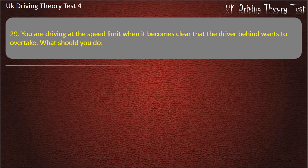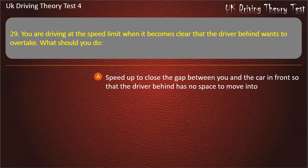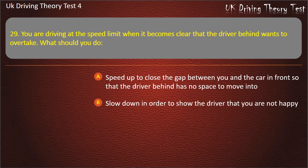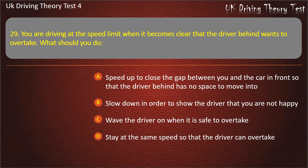Question 29. You are driving at the speed limit when it becomes clear that the driver behind wants to overtake. What should you do? Speed up to close the gap in front; slow down to show you are not happy; wave the driver on when it is safe; or stay at the same speed so the driver can overtake. Answer: Stay at the same speed so that the driver can overtake.